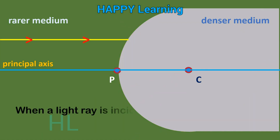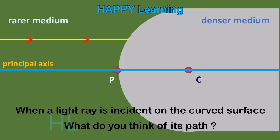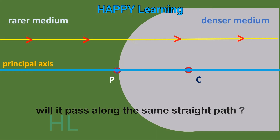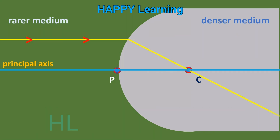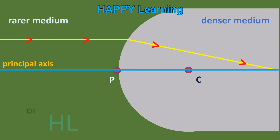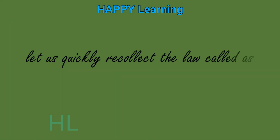When a light ray is incident on the curved surface, what do you think of its path in the other medium? Will it pass along the same straight line? Or will it pass through the center of curvature? Or will it pass through some other direction?